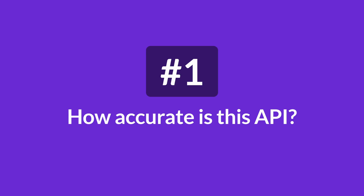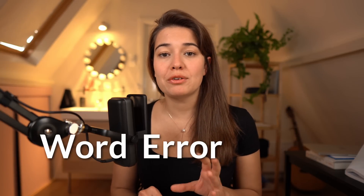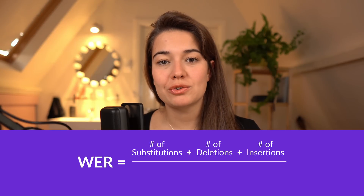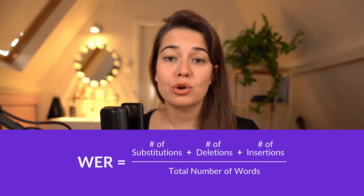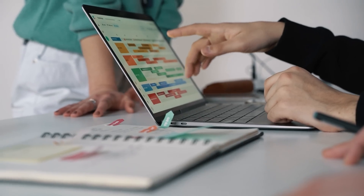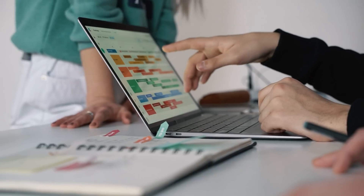Number one: how accurate is this API? Accuracy of automatic speech recognition systems, or ASRs for short, is calculated using a metric called word error rate, or WER. Word error rate is the number of errors made during the transcription divided by the total number of words. Before selecting an API and integrating it in your system, make sure you check their benchmark results with respect to WER.